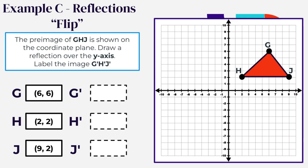In example C, we perform a reflection, or flip, over an axis. The pre-image of triangle GHJ is shown on the coordinate plane. Draw a reflection over the Y axis and label the image G prime, H prime, J prime. First, identify which axis to flip over — the Y axis — and draw a dotted line down the Y axis as a guide. For G at (6, 6), we go to the opposite side, 6 spaces, landing at (-6, 6) — that's G prime.